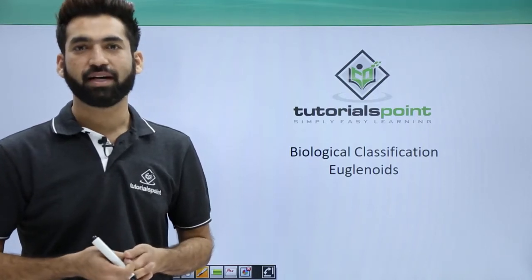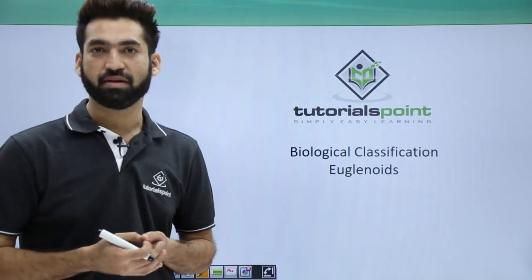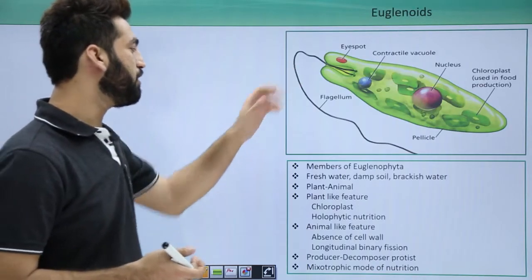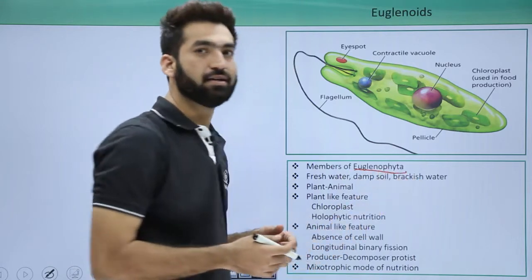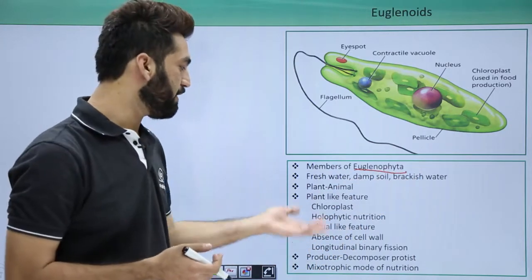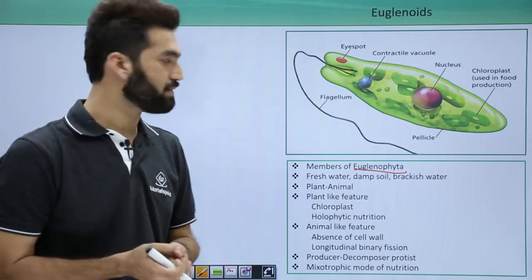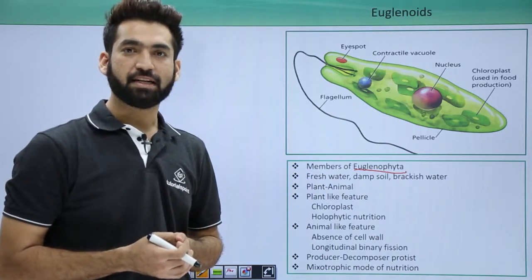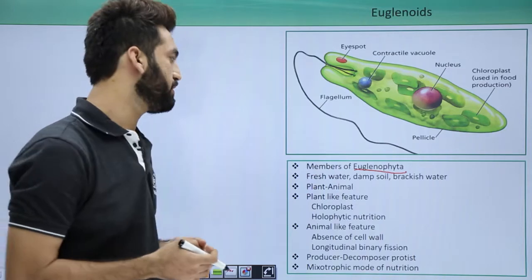In this session we'll be discussing the third photosynthetic protist member, which is euglenoids. Euglenoids are members of euglenophyta. 'Phyta' is used for plants because they have plant-like features — they have photosynthetic pigments for photosynthesis. The main member of this euglenophyta group is euglena, and we'll be discussing the details of euglena.